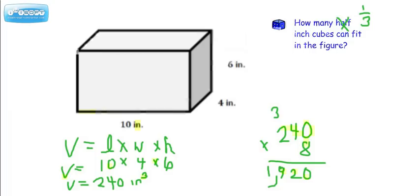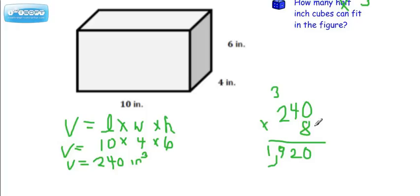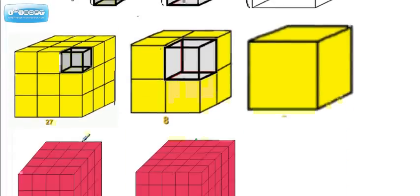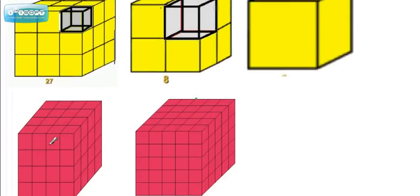So what you would have to do in that case is you would have to take this number and not multiply it by 8, but instead you would multiply it by 27, and you would get a completely different answer. And likewise, if it were one-fourth of an inch, then you would have to multiply it by 64 because there's 64 of these in one cubic unit, and so on.